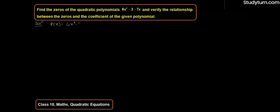So firstly we have to find the zeros of the quadratic polynomial. Zeros कैसे निकालेंगे — by factorization method. Factorization ka method use करेंगे और इस method की help से we find the zeros of the given polynomial. Factorization method में we have to find the factors for 18 — 18 के factors क्या होते: 9 and 2.